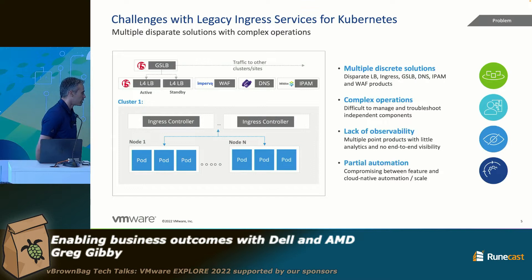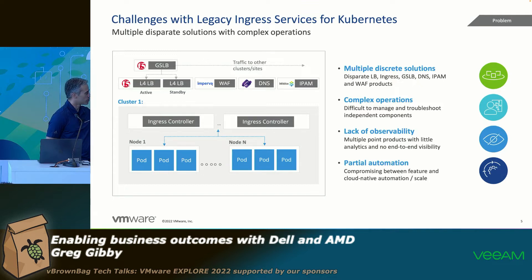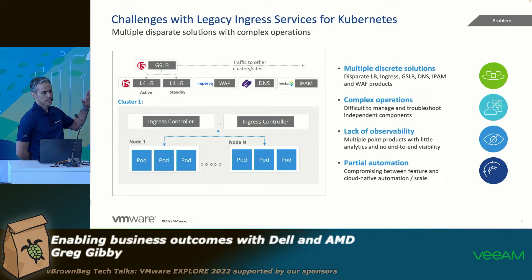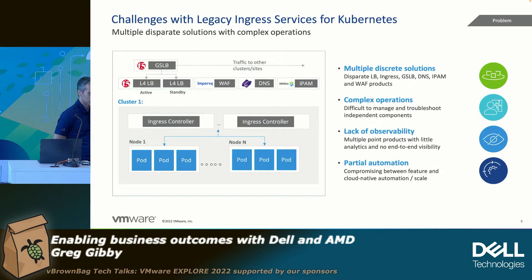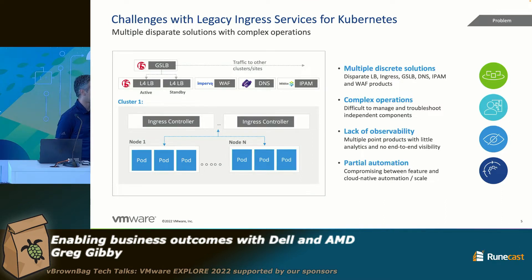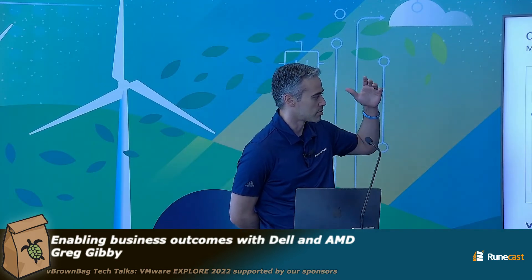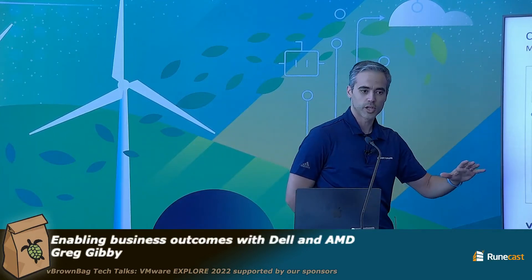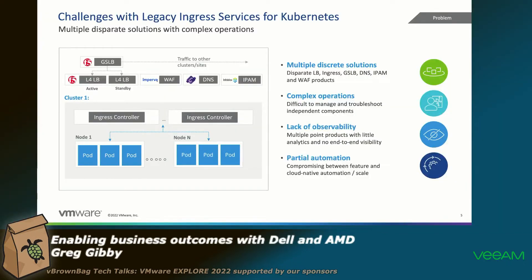The challenges today are that ingress controllers are contained in the cluster. Whenever you have to do ingress and deliver applications to your customers, it's not only load balancing, not only ingress — you have to do other things. Maybe you have to do GSLB, WAF, and DNS. This means you have to have multiple discrete solutions, complex operations, no end-to-end visibility, and automation only inside your Kubernetes cluster.